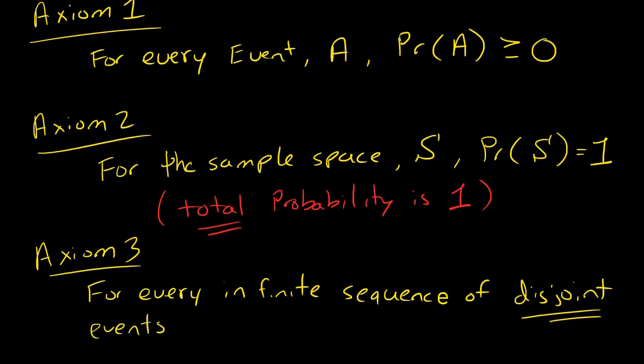Remember disjoint means that the events have no elements in common. So if we have event A1, A2, dot dot dot, none of these events have any elements in common because they are all disjoint.